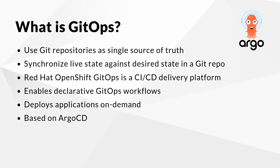So now that we know what ACM is, let me explain what the GitOps way is and what Red Hat OpenShift GitOps does. The GitOps way uses Git repositories as a single source of truth to deliver infrastructure as code. Automation is employed to keep the desired and live state of clusters in sync at all times. This means any change to a repository is automatically applied to one or more clusters, while changes to a cluster will be automatically reverted to the state described in the single source of truth.